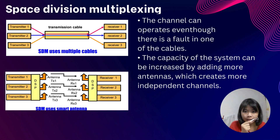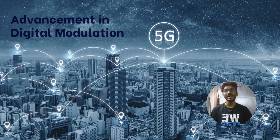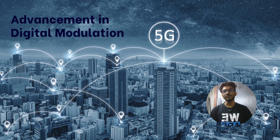For Space Division Multiplexing, multiple cables or smart antennas can be used so that channels can still operate even if there is a fault in one of the cables. To increase the capacity of the system, more antennas can be added, which creates more independent channels.